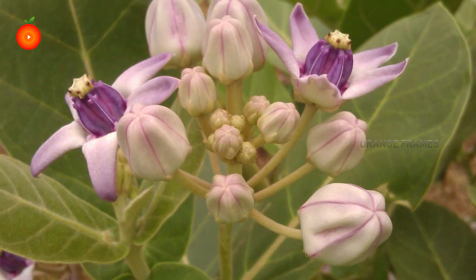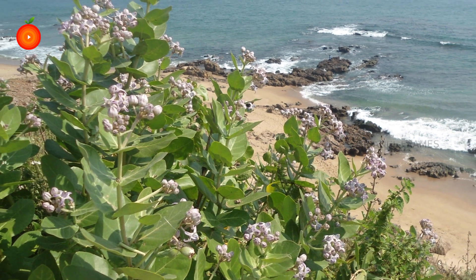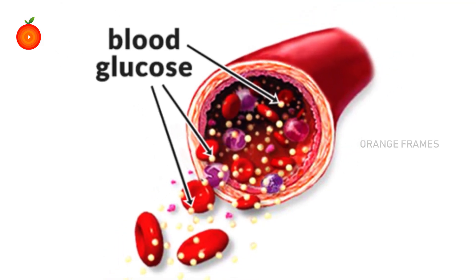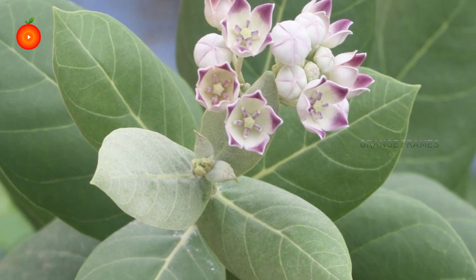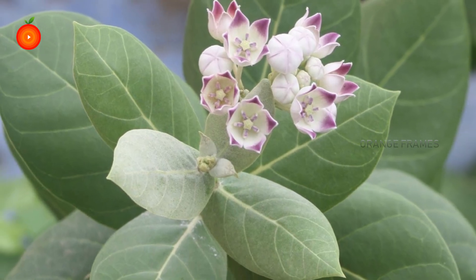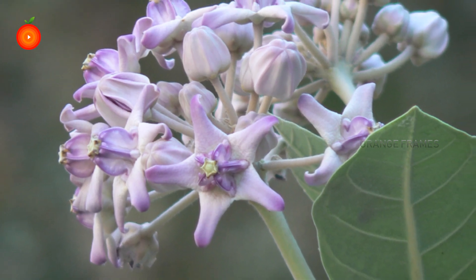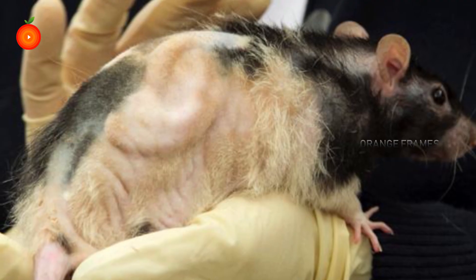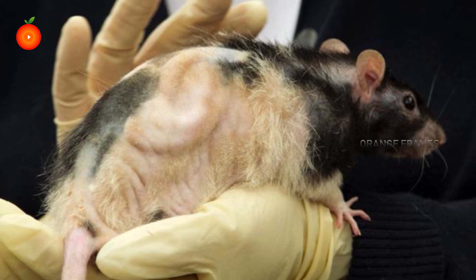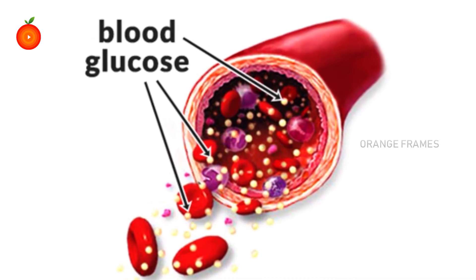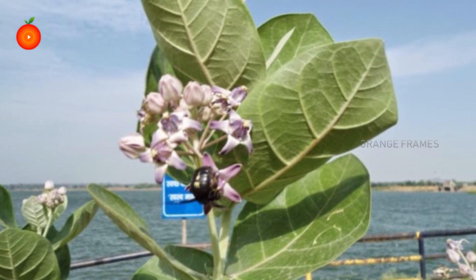The scientific basis of using Aak leaves for diabetes: you must be curious to know how Aak leaves actually help to lower blood glucose. According to an experiment done in rats, the leaves and flowers were effective in lowering serum glucose. The administration of leaf and flower extracts to streptozotocin-induced diabetic rats showed a significant reduction in serum glucose levels.